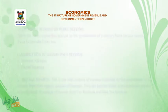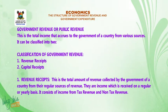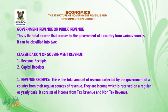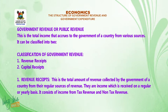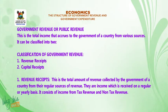Government revenue, or public revenue, is the total income that accrues to the government of a country from various sources. It can be classified into two: A. Revenue receipts, and B. Capital receipts.